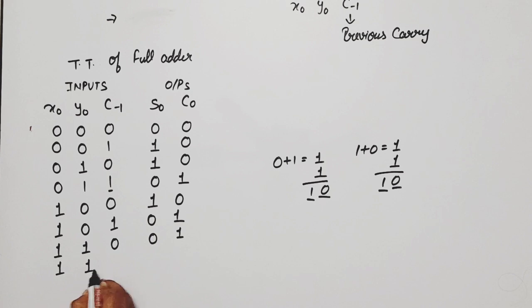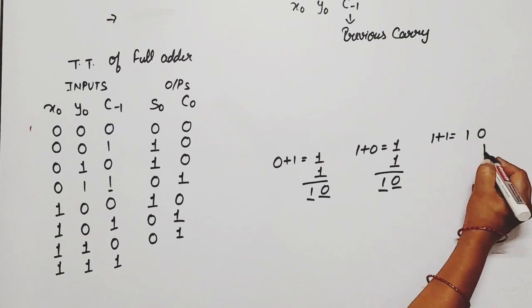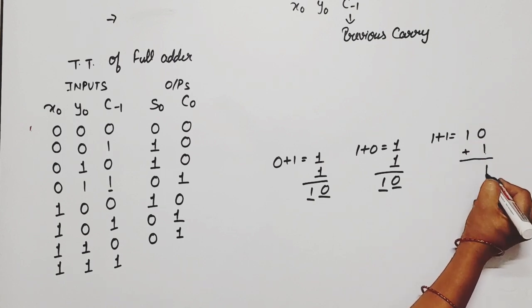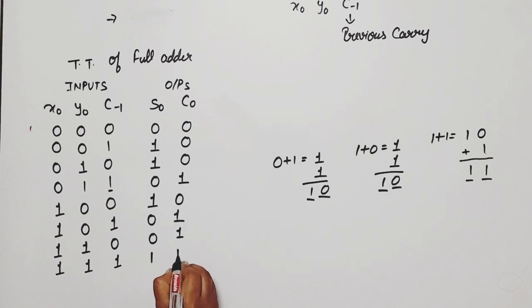Now 1, 1, 1 means 1 plus 1 is equal to 1, 0. 1 more 1 add, so 0 plus 1, 1. Here 1, sum 1, carry 1. Sum 1, carry 1. So this is truth table of full adder.